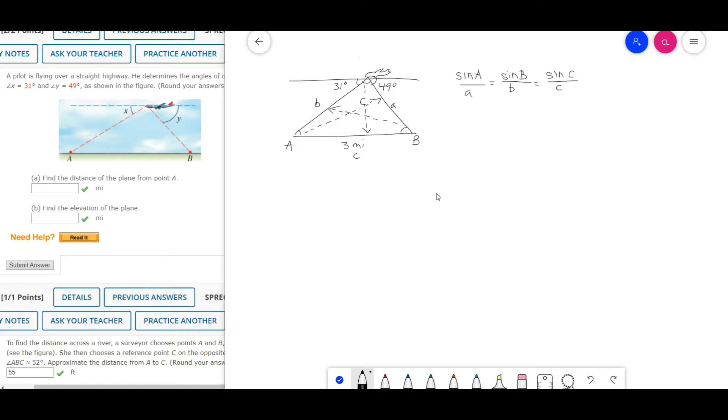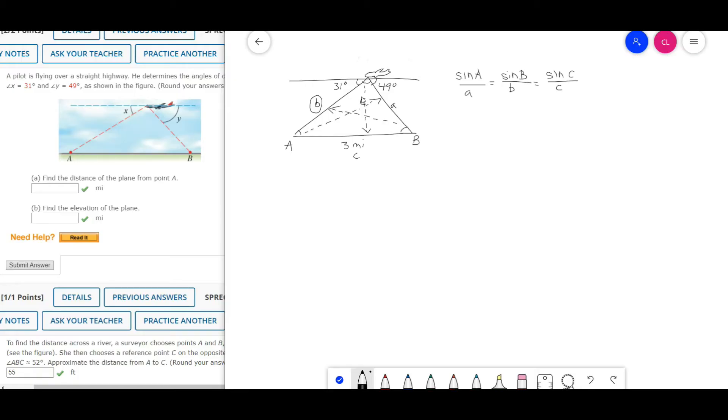Part A wants us to find the distance from the plane to point A, which would be side B. There's not much given information here, so we're going to want to find angle C so we can get a ratio going.